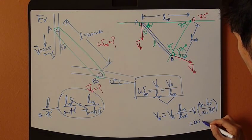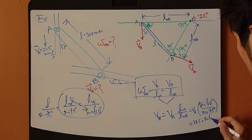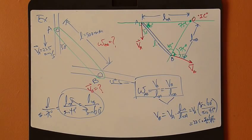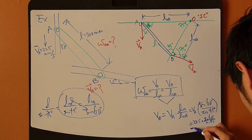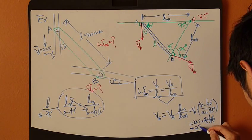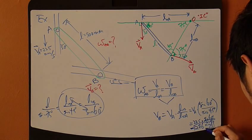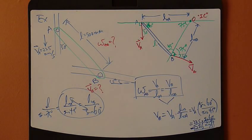So, VA is 225, sine 60 divided by sine 45. We punch numbers. And, 276. Exact same result as the earlier method.